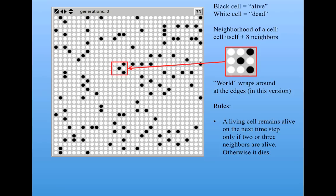A dead cell becomes alive on the next time step, only if exactly three neighbors are alive. So, those are the rules that every cell obeys. All cells are updated simultaneously in discrete time steps. You'll see how that works in a minute.